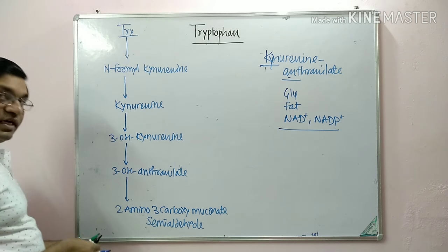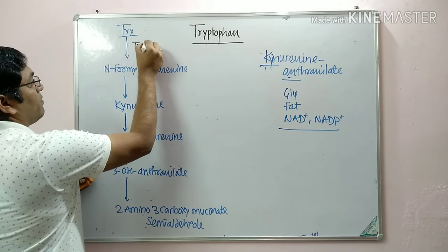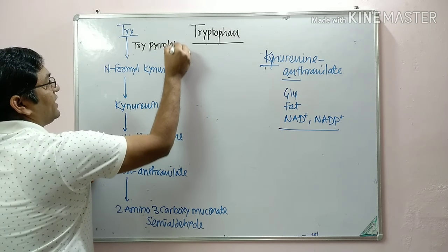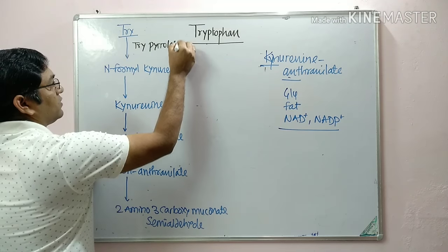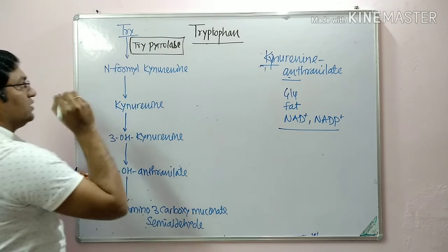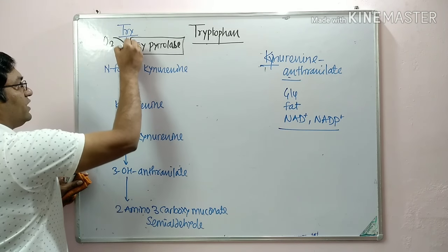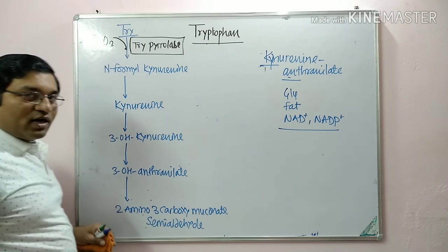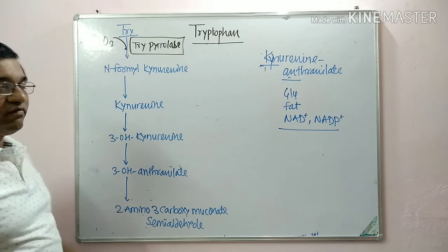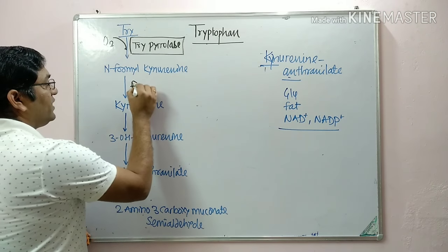Tryptophan pyrolase is an iron metalloprotein that contains iron. Molecular oxygen is incorporated into the indole ring, causing cleavage of the indole ring and converting tryptophan into N-formyl kynurenine. The second enzyme is formamidase, also known as kynurenine formylase.